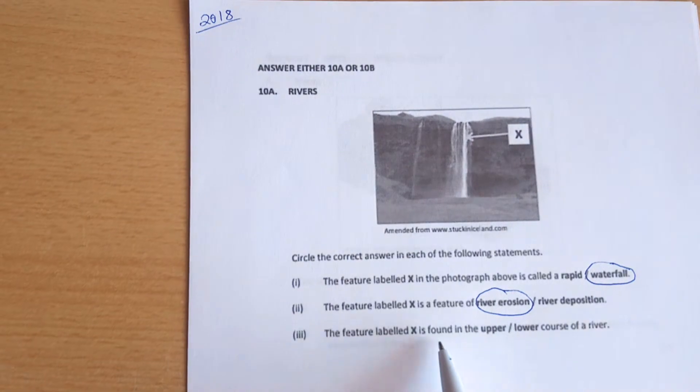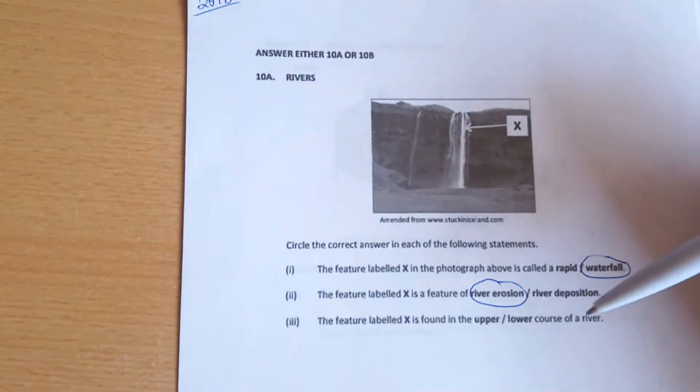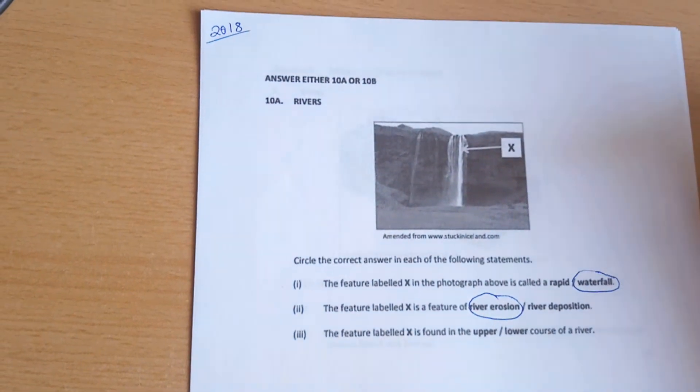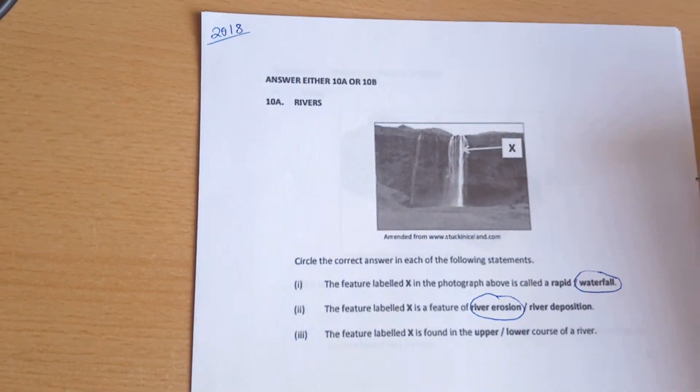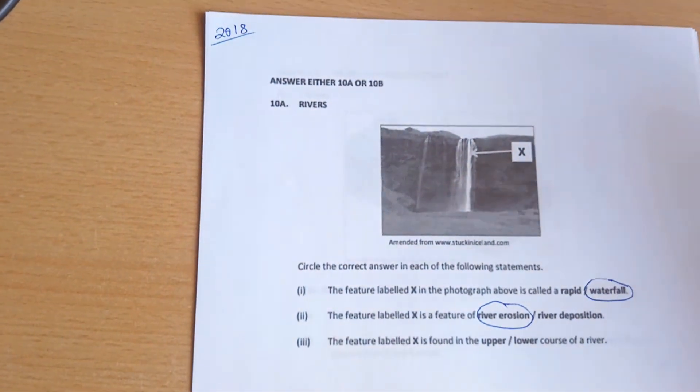The third question asks if feature X is found in the upper or lower course of the river. The upper course is the steepest part found at the start, while the lower course is flatter land where you find flood plains and similar features.